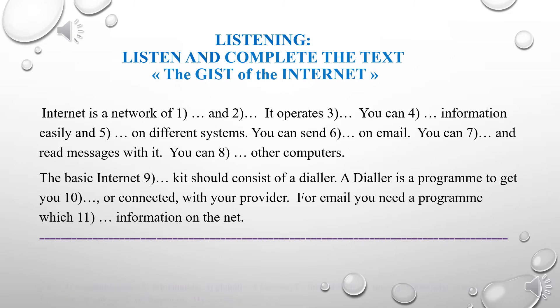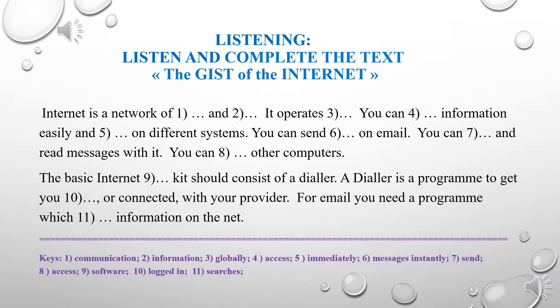Here is how you would fill in the blanks. The Internet is a network of communication and information; it operates globally. You can access information easily and immediately on different systems. You can send messages instantly on email and send and read messages with it. You can access other computers. The basic Internet software kit should consist of a dialer — a program to get you logged in or connected with your provider. For email, you need a program which searches information on the net.